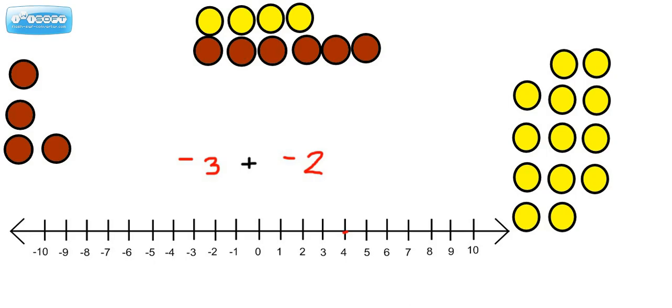This means we're at a negative 3 on the number line. Let's find that on the number line, that's right here. And this means go left 2 on the number line. Go left 2, 1, 2 to the left. And look at where we've landed, we've landed on a negative 5.